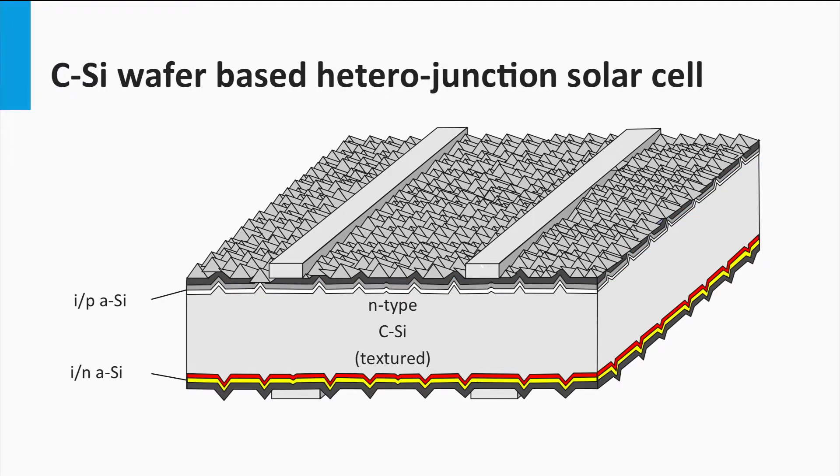At the rear surface a similar junction is made. First, a thin layer of intrinsic amorphous silicon is deposited on the wafer surface, indicated by the red. On top of the intrinsic layer an N-doped amorphous silicon is deposited, indicated by the yellow color.